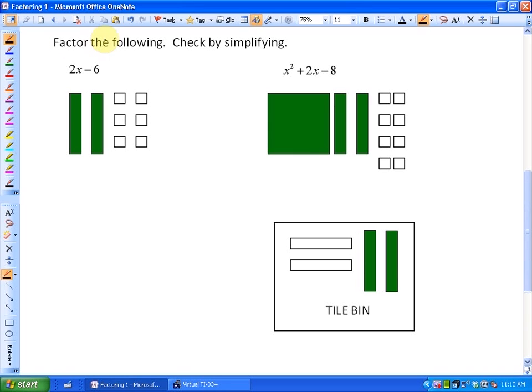As our first example, it says factor the following and check by simplifying. We're going to factor the expression 2x minus 6. So what we're going to do is take these 2xs and the minus 6 and see if we can create an area. In this particular case, to do that, here's what we would do. We don't need any extra algebra tiles to create this area. Our area would look something like this.